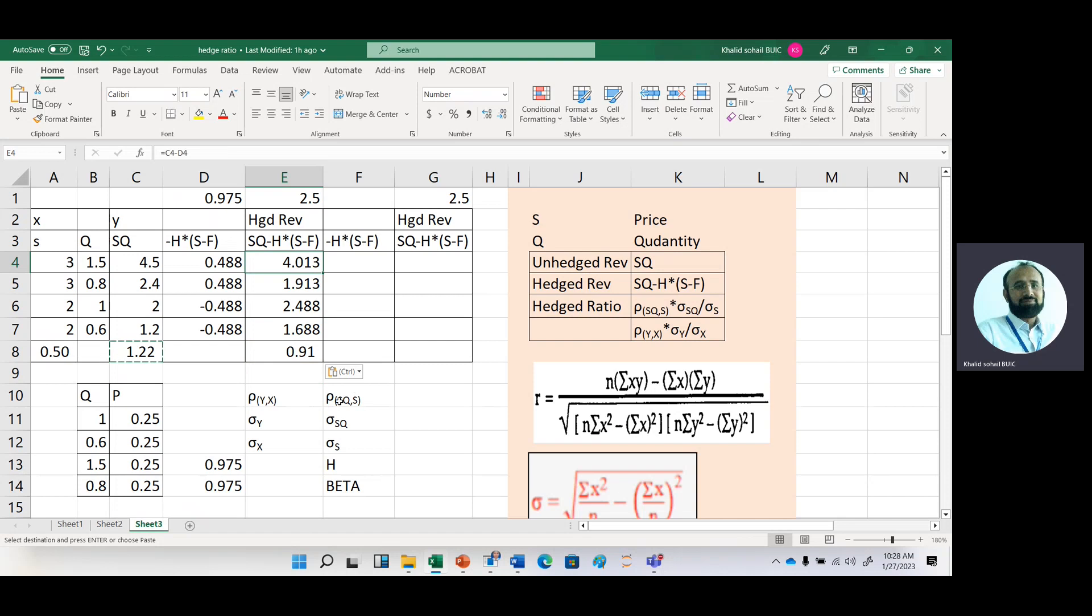Now to get optimal hedge ratio, we need correlation coefficient. So first, we calculate correlation coefficient by Coral function. First range and then second range of SQ that is represented by Y. So this is correlation coefficient. And then we need standardization of SQ that we had already calculated, and then standardization of X means price.